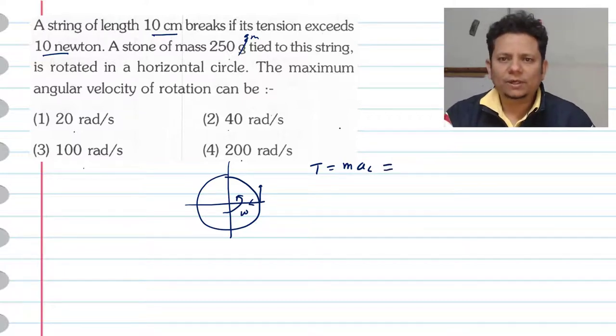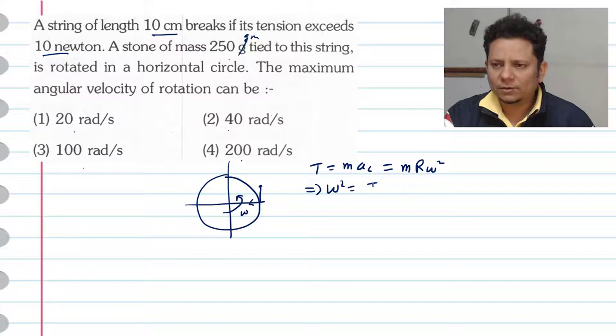Now because here is omega, this is M R omega square. Which implies you can say omega square will be equal to T divided by M R.